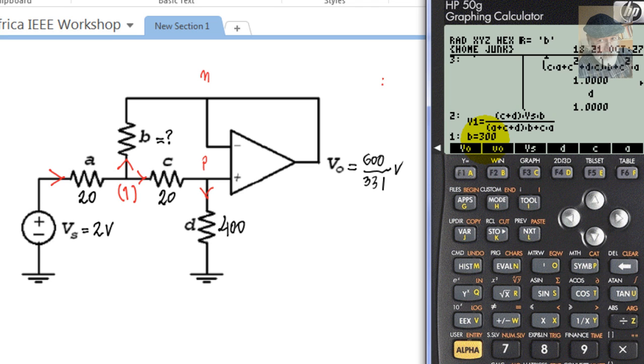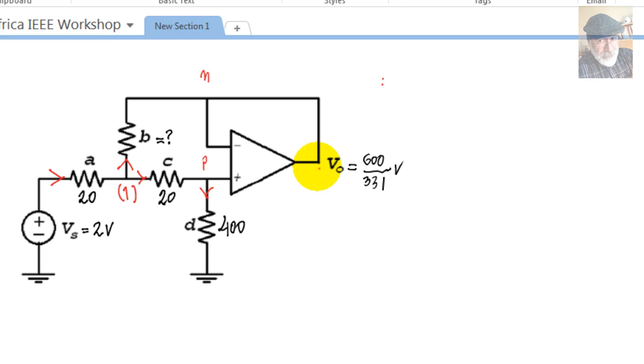But the exercise was asking us something else. What happens if we connect now a resistor at the output, Rx, and that resistor was a 5 ohm resistor? We want to know what is the output power of the op-amp. The hint was compute what is the output current of the op-amp, this current here. How do I compute that?